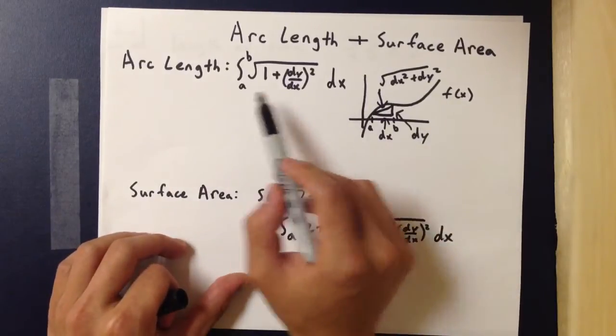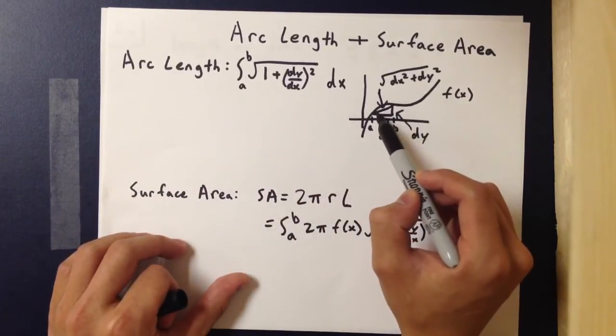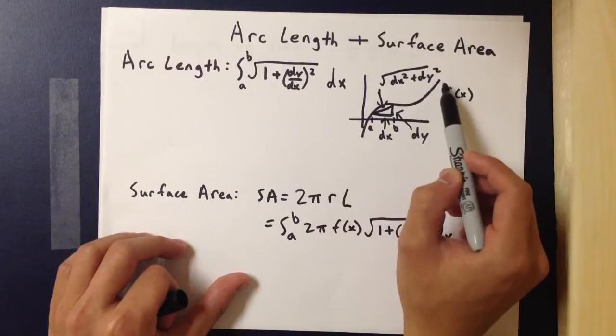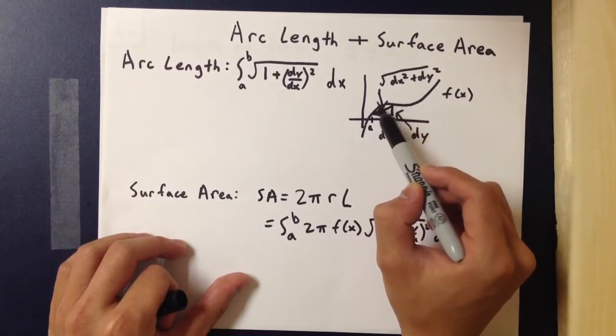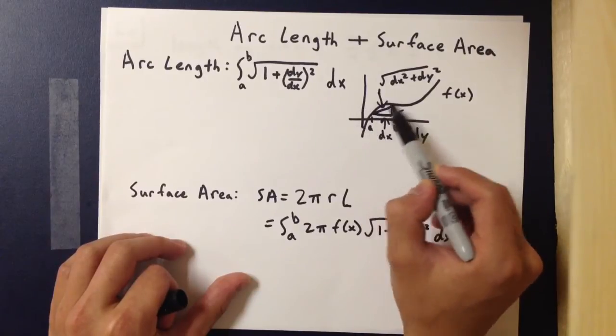That's why when we use integrals, we can find the arc length because with respect to x, it uses every single one of those little hypotenuses.